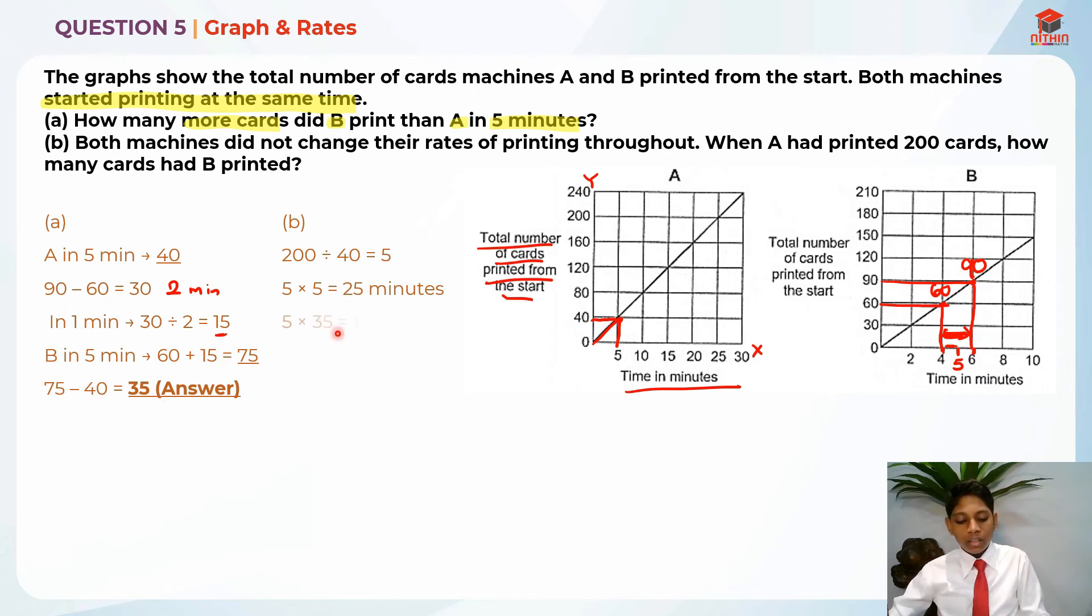So, we are going to find the difference basically taking 5 times 35 which will give us 175. So, B printed 175 more cards than A in 25 minutes. And in order to find how many cards B actually printed, we are going to take 200 plus 175 because 200 is basically like 1 unit which are in both A and B. And B actually printed 175 more. So, you are going to take 200 plus 175 which will give us 375 as the answer for part B.